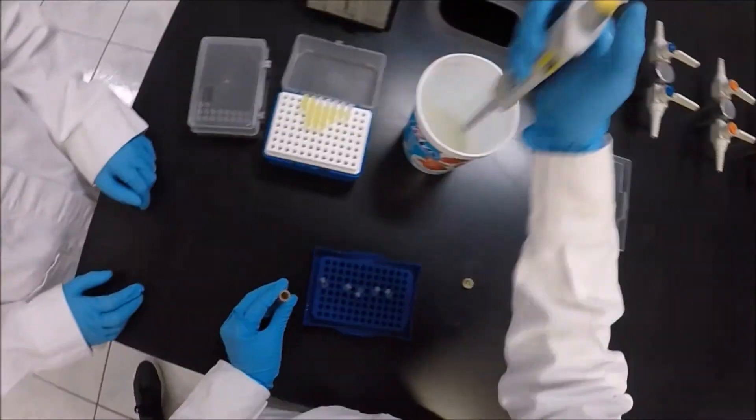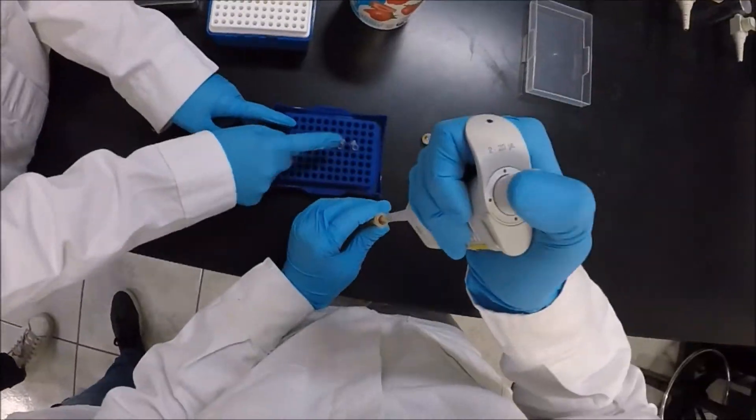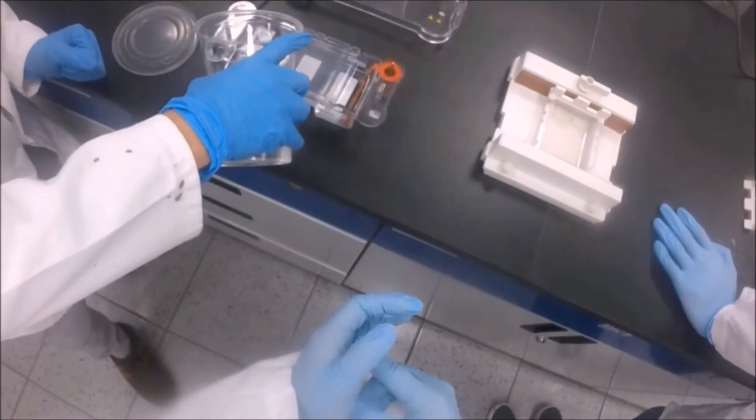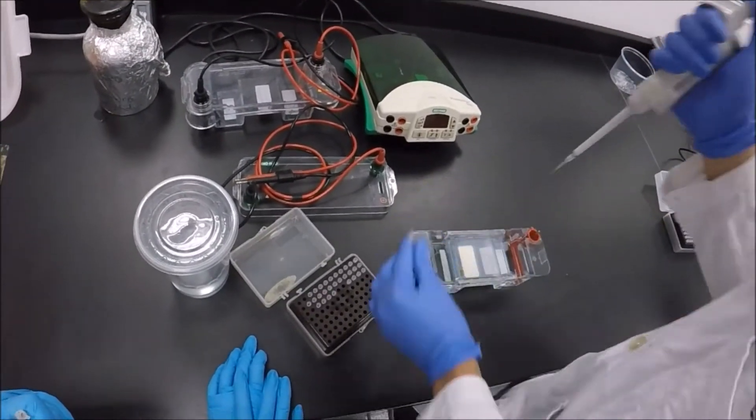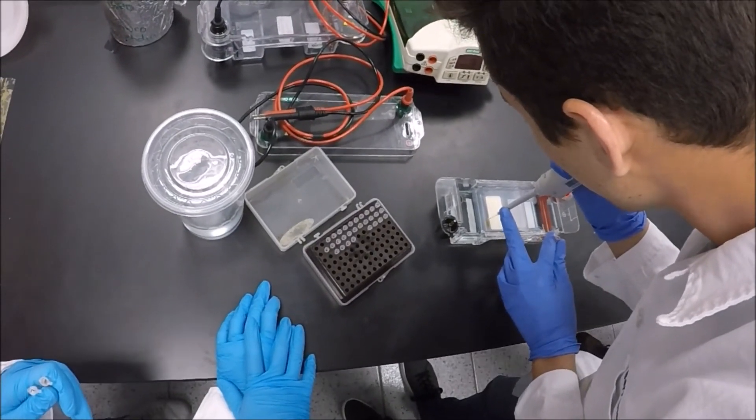Then, 2.5 microliters of loading dye were added to all the sample microtubes. The agarose gel was placed in the electrophoresis chamber covered by TAE 1X buffer. The five samples were loaded into the agarose gel for submerged agarose gel electrophoresis.